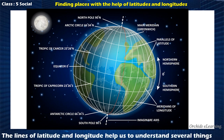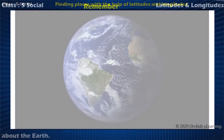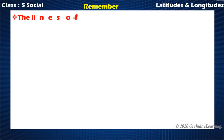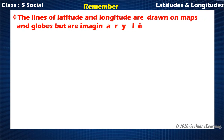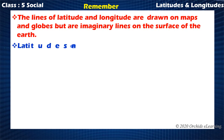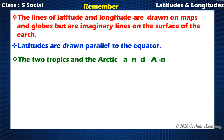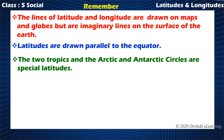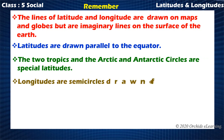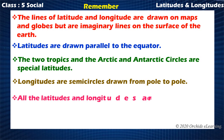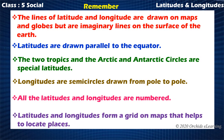The lines of latitude and longitude help us to understand several things about the Earth. Remember: the lines of latitude and longitude are drawn on maps and globes but are imaginary lines on the surface of the Earth. Latitudes are drawn parallel to the equator. The two tropics and the Arctic and Antarctic circles are special latitudes. Longitudes are semi-circles drawn from pole to pole. All latitudes and longitudes are numbered, and together they form a grid on maps that helps to locate places.